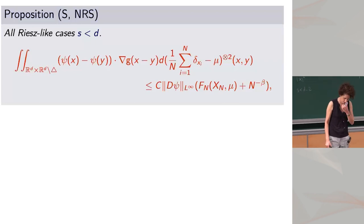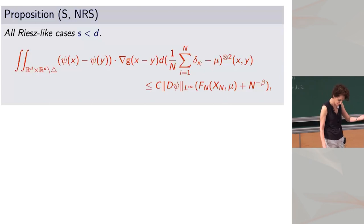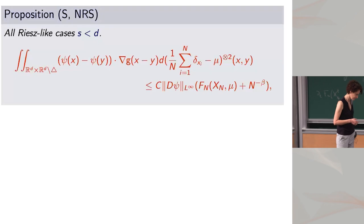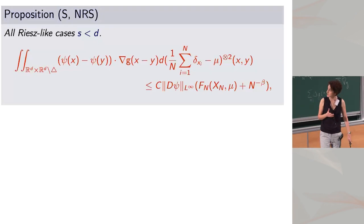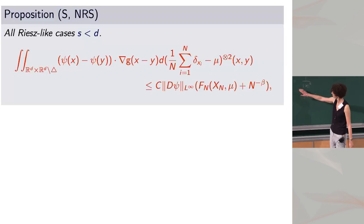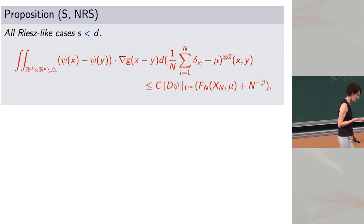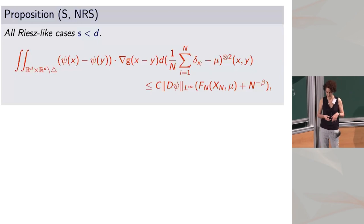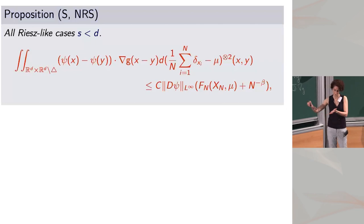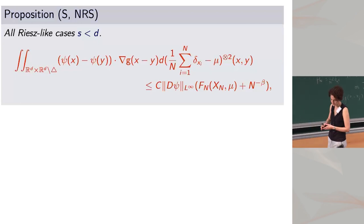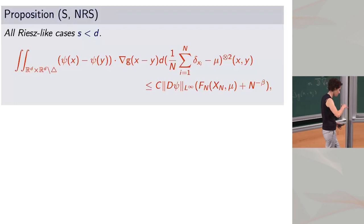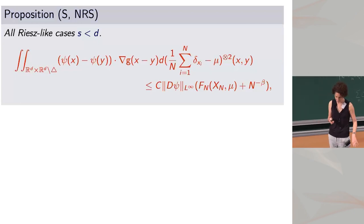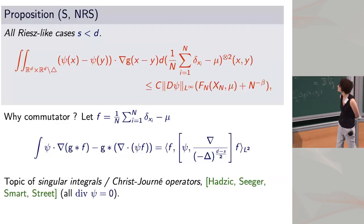We proved this functional inequality — first in the regime between D minus 2 and D, then with Rosenzweig and Nguyen extended to S less than D minus 2. We also realized you don't have to be exactly Riesz; you can be Riesz-like, meaning the interaction is bounded above and below by Riesz interactions both near zero and at infinity, and the Fourier transform has similar behavior. We call this a commutator estimate, because what appears is: Psi dot grad G convolved with F minus G convolved — two operations in different orders — which can be written as a commutator.